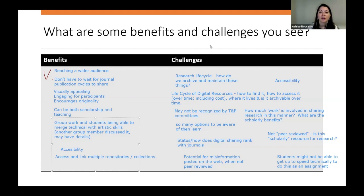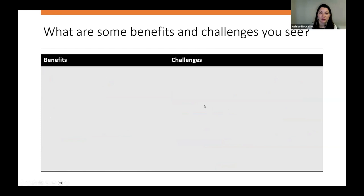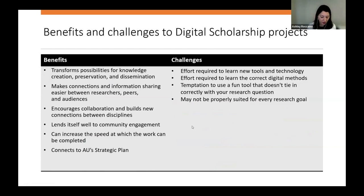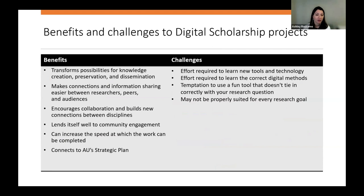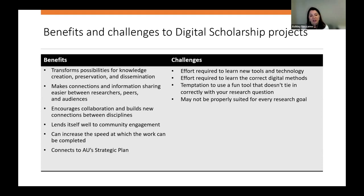Some benefits I wanted to mention: it can lend itself well to community engagement because in some cases you can expand your reach and more quickly and more easily share information with the people who need that knowledge, whether that is other researchers, peers here at AU, or wider audiences. It can transform the possibilities for knowledge creation, preservation, and dissemination, depending on what you're trying to do and what kind of tools you're using. It can encourage collaboration and connections between disciplines, and in some cases, it can increase the speed at which the work can be completed — computers can do a lot faster, and sometimes with more accuracy than humans. It also connects to AU strategic plans, specifically the three pillars of scholarship, learning, and community.